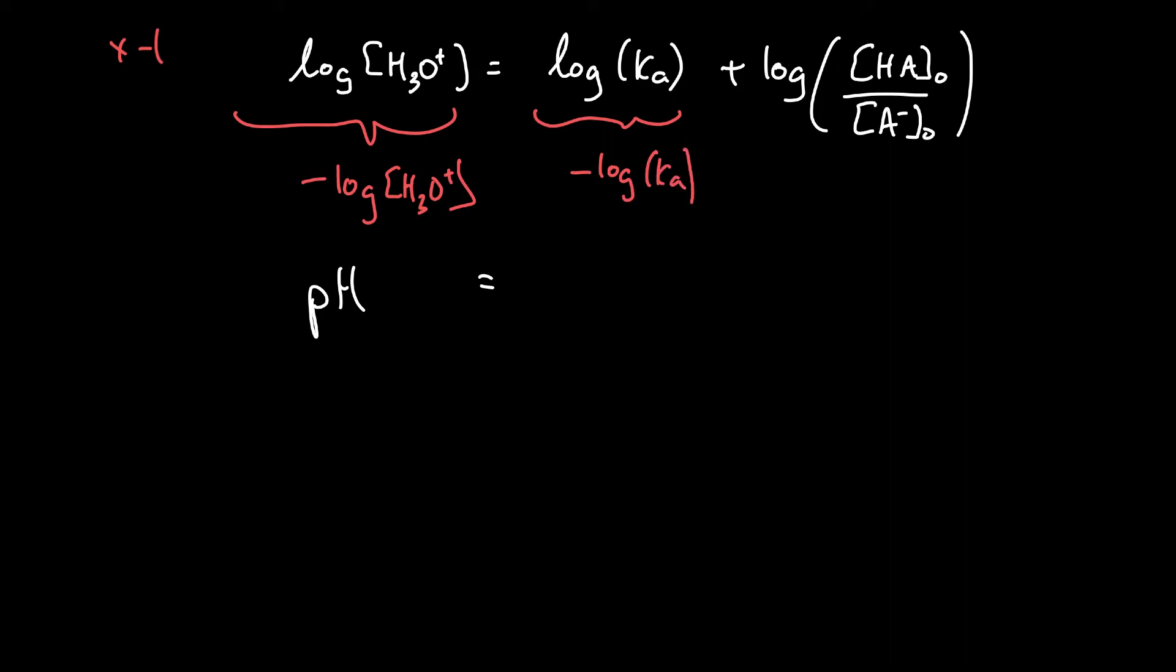And remember, when we've got negative log of something, we can write that as P. So the negative log of Ka can be written in another way as pKa. And then the last term would be the negative log of the acid concentration over the conjugate base concentration. I'm going to drop the zeros there because I'm going to pretend that we can just ignore that.